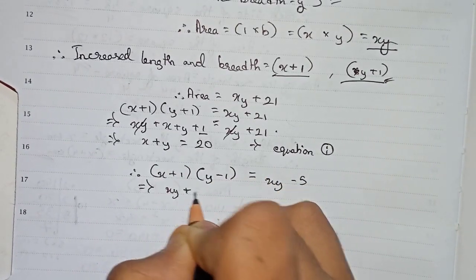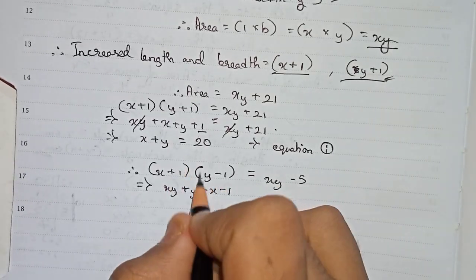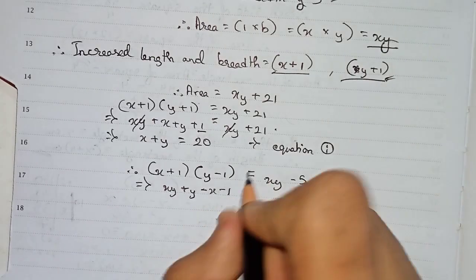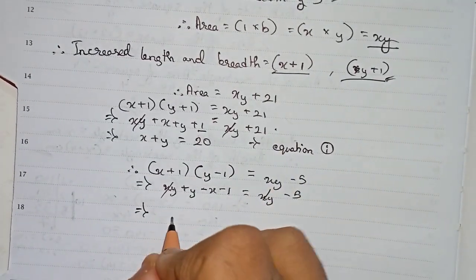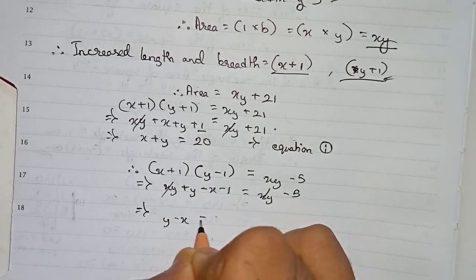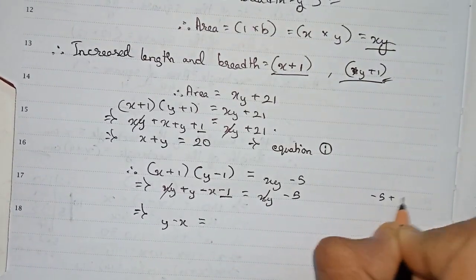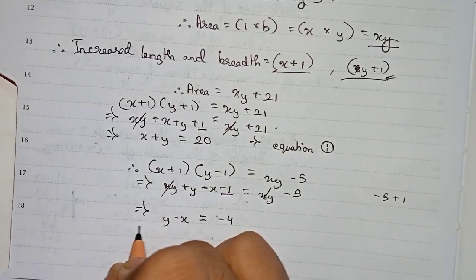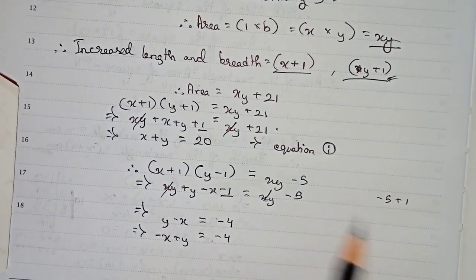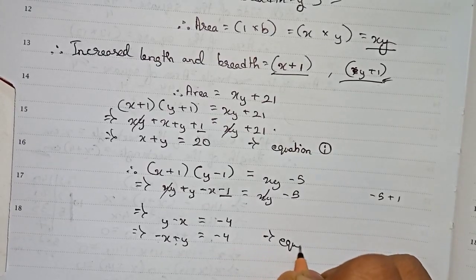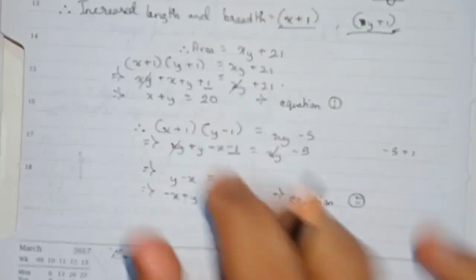Multiplying out (x+1)(y-1) gives xy - x + y - 1 = xy - 5. The xy terms cancel out, leaving -x + y - 1 = -5, so taking -1 to the right side: -x + y = -5 + 1 = -4. Rearranging, we get -x + y = -4. This is equation number 2.